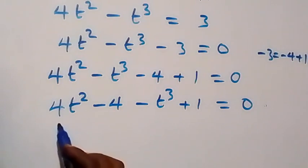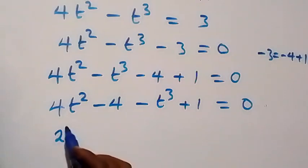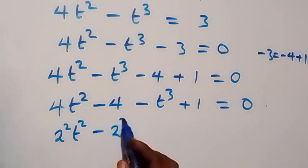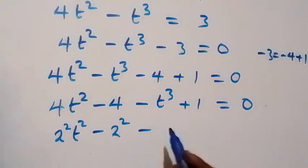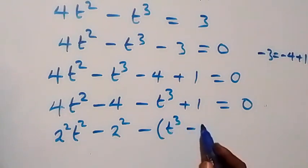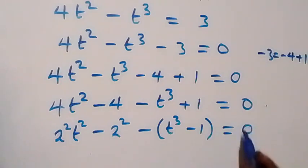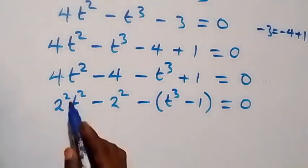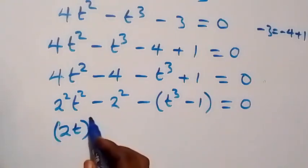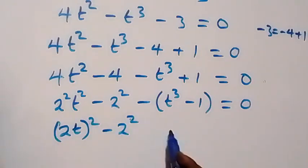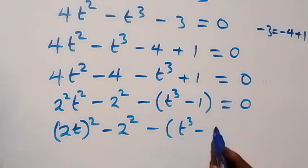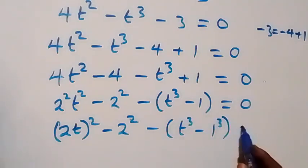We can express 4 as 2 squared, so we have 2 squared times t squared minus 2 squared, then factoring out the minus, we have minus (t cubed minus 1). This can be written as (2t) squared minus 2 squared, minus (t cubed minus 1 cubed), equals 0.